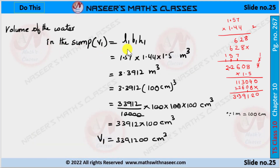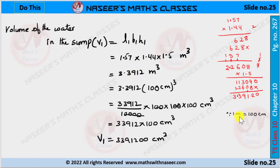Now we find the volume of water in the sump. V1 = L1 × B1 × H1, where L1 = 1.57, B1 = 1.44, and H1 = 1.5 cubic meters. After multiplying, we get V1 = 3.3912 cubic meters. We already know that 1 meter = 100 centimeters, so we substitute meters into centimeters.